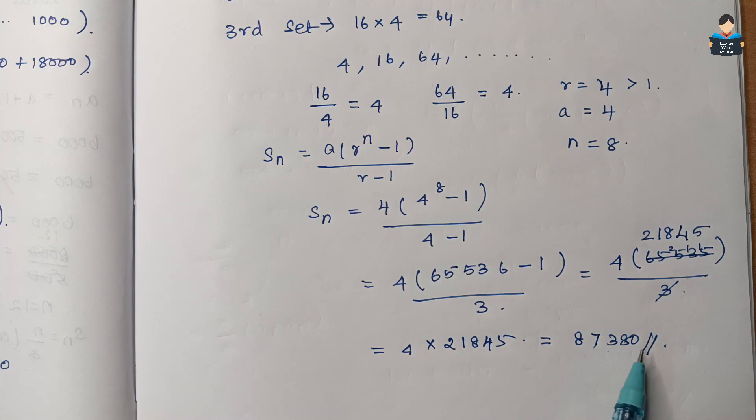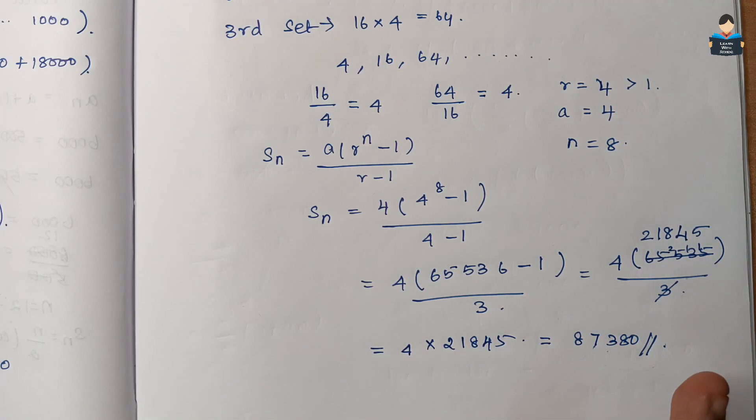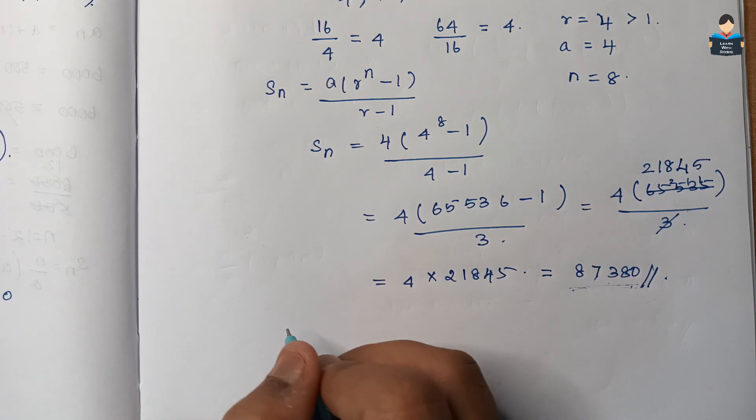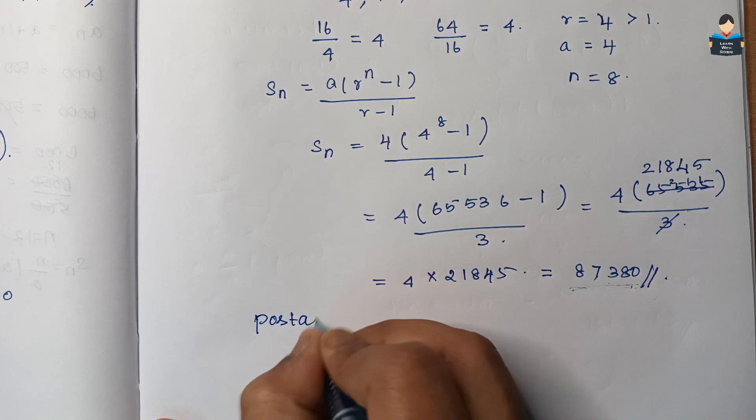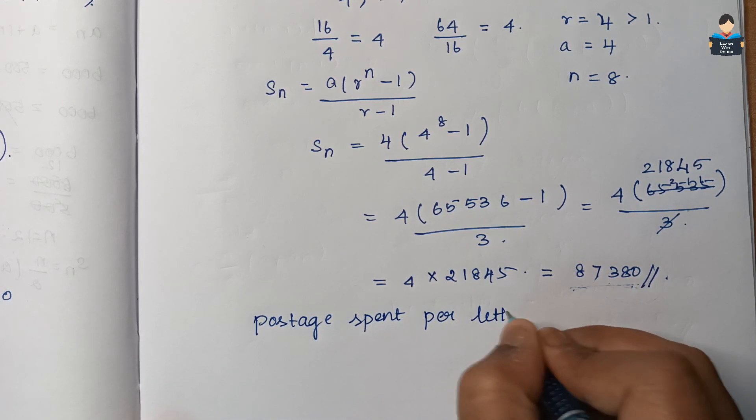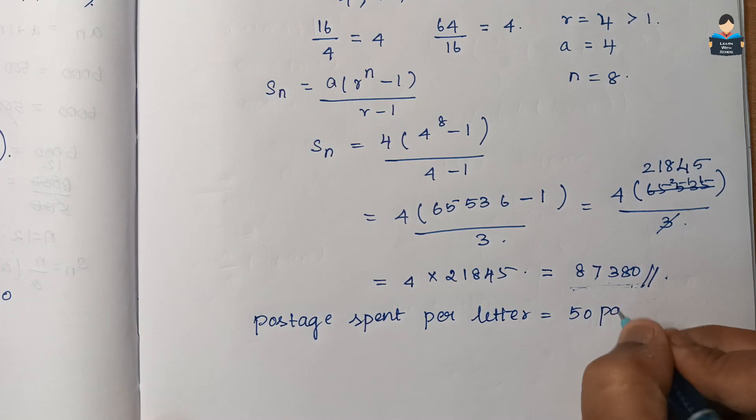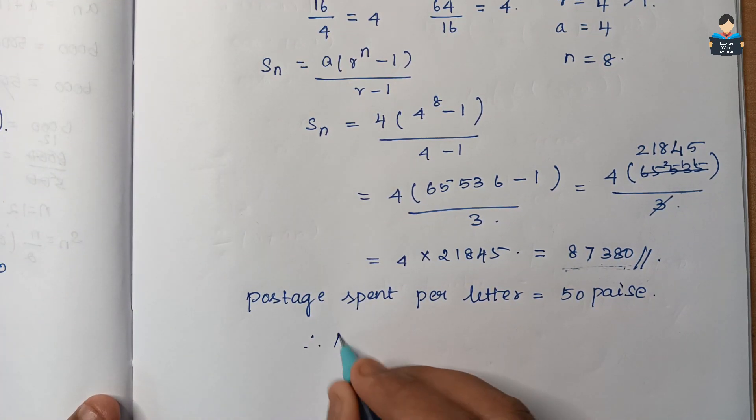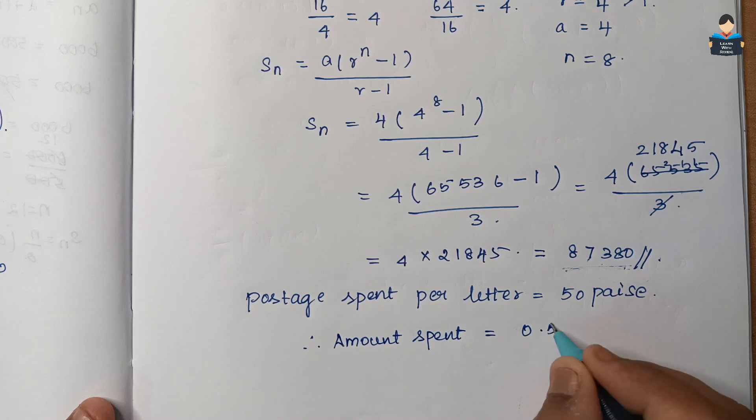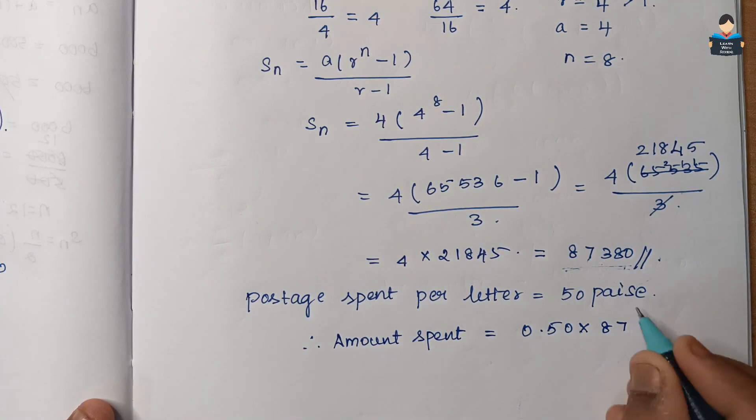So 87,380 letters are mailed. For posting the letters, mail cost is 50 paise per letter. Amount spent is equal to 50 paise times 87,380.